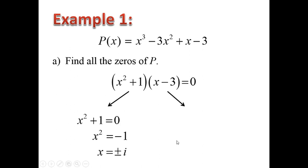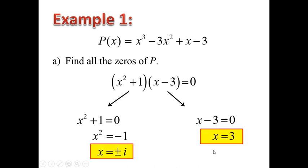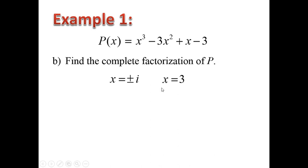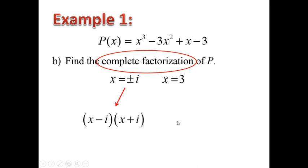For the real solution, we have x equals 3. So if you count them all, we have 1, 2, and 3 solutions. Putting it back into complete factorization form, we have x minus i, times the quantity x plus i, times the quantity x minus 3.